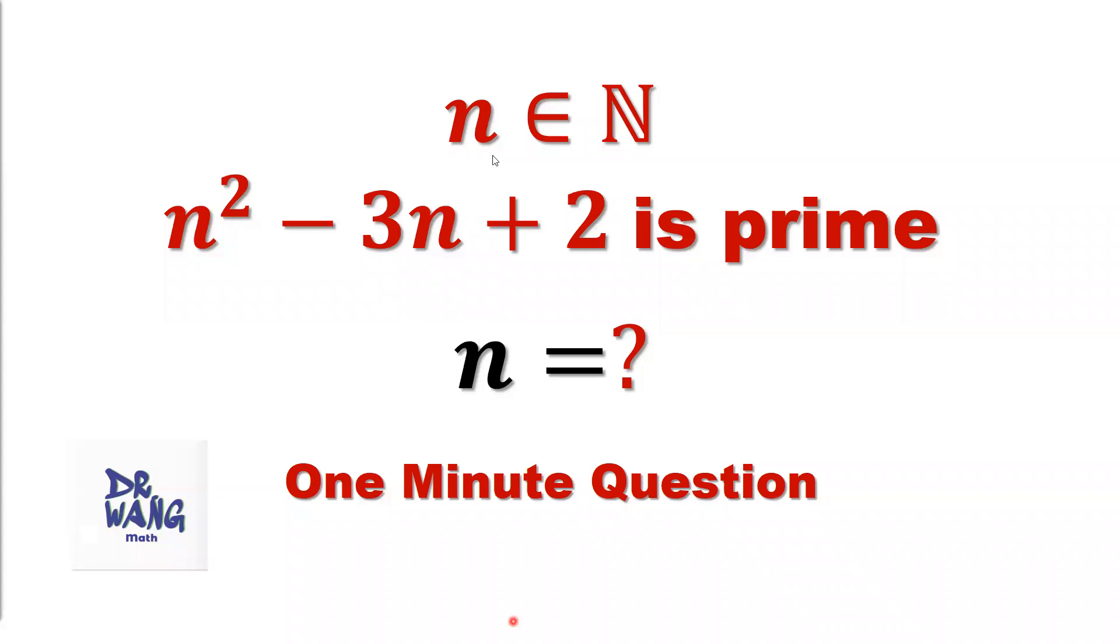Here is the question. If n is a positive integer, n squared minus 3n plus 2 is prime, what is the value of n?